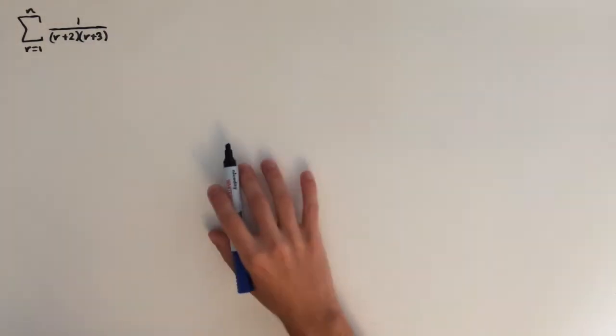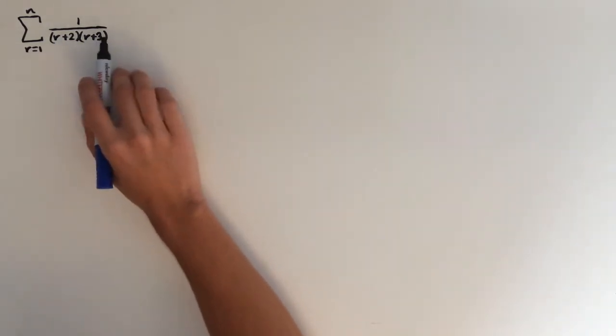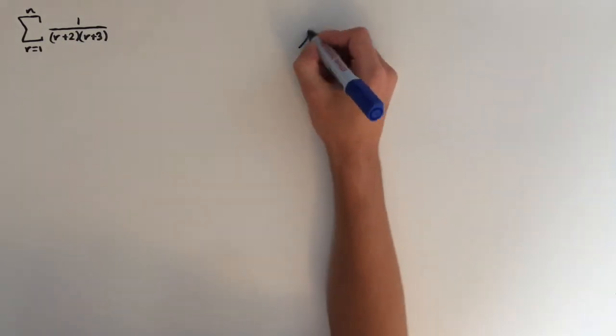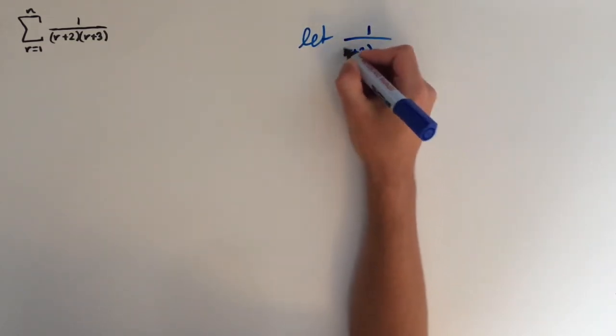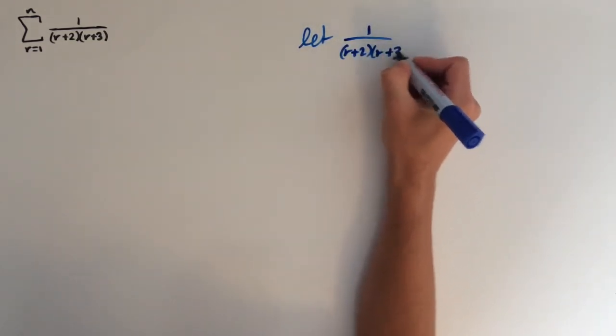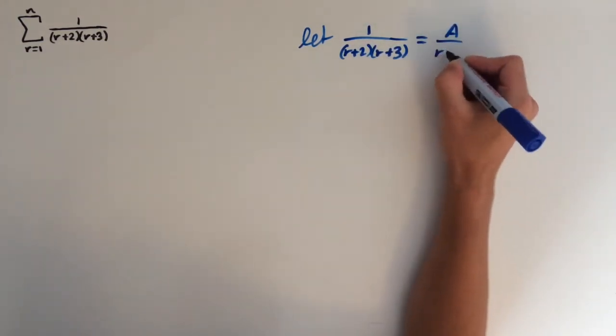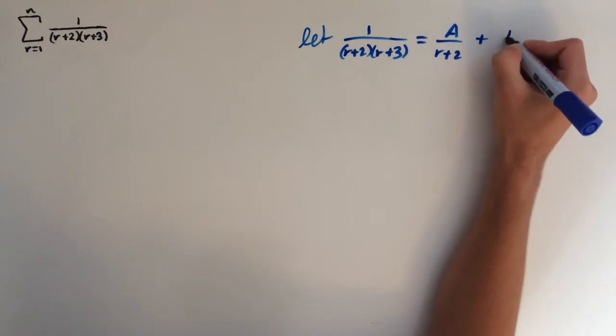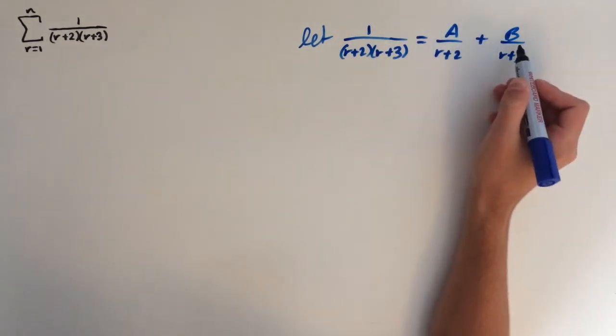So the first step we're going to do is use partial fractions. We want to express this fraction as two separate fractions. So we're going to let 1 over r plus 2 times r plus 3 equal a over r plus 2 plus b over r plus 3. And values of a and b are what we're trying to find out.